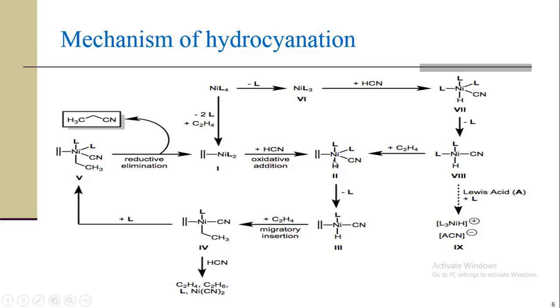After that, the ligand will be removed and this cyanide will form a covalent bond with the metal. After migration insertion, we will get CH3, this H will migrate here, and CH3-CH2 with the central metal will be formed. Another molecule of CH2-CH2 will be added, and after that ligand will be added and we will get CH3-CH2 with ligand and olefin.